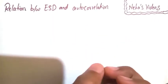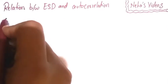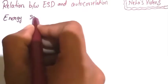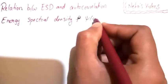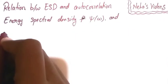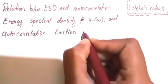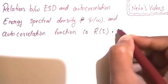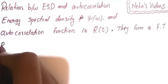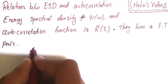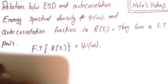In this video we will discuss the relationship between energy spectral density and autocorrelation. Energy spectral density is denoted by psi of omega and autocorrelation function is denoted by R of tau. These form a Fourier transformable pair, represented as: the Fourier transform of R(tau) equals psi(omega). Let us prove this.